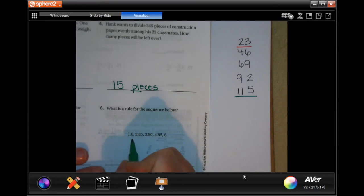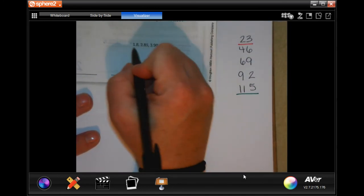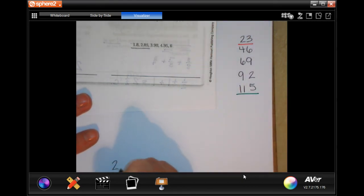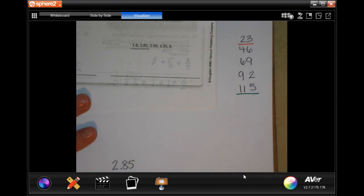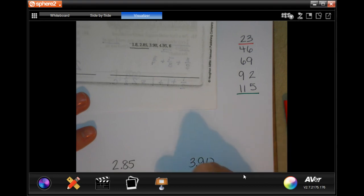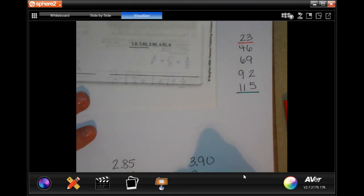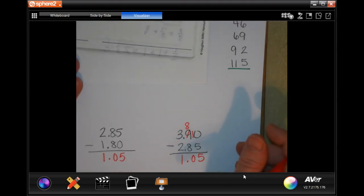What is a rule for the sequence below? We need to find out the difference between each one. I'm going to take these two and subtract them: 2.85 minus 1.80. I don't like not having anything there so I'm going to put a 0 because it's after the decimal. Drop my decimal, 5 minus 0 is 5, 8 minus 8 is 0, 2 minus 1 is 1. Now I just need to see if that holds true for the next batch. 3.90 minus 2.85. 0 cannot take away 5, so 10 minus 5 is 5, 8 minus 8 is 0, and 3 minus 2 is 1.